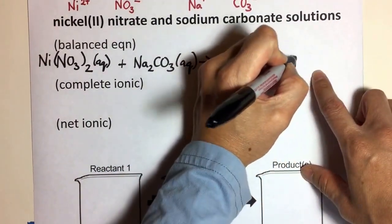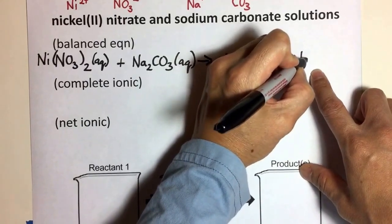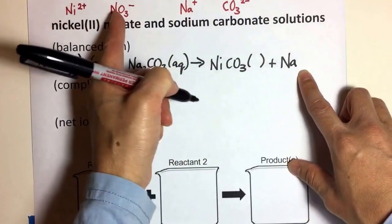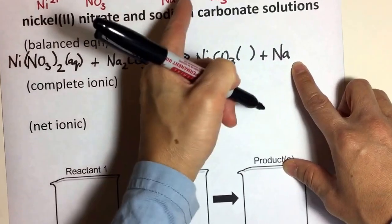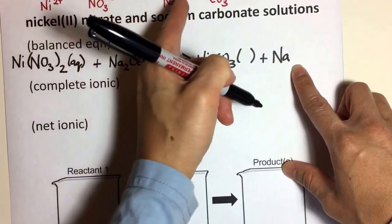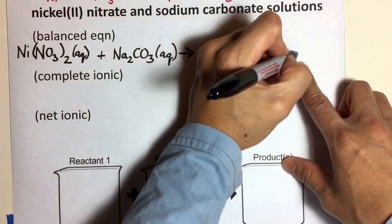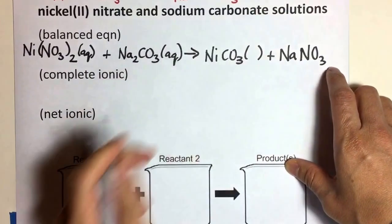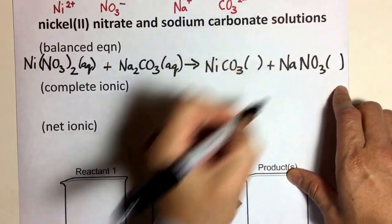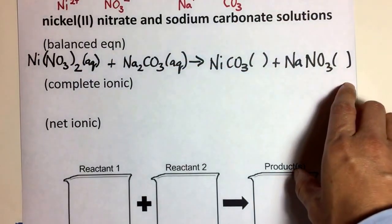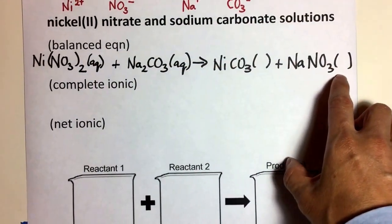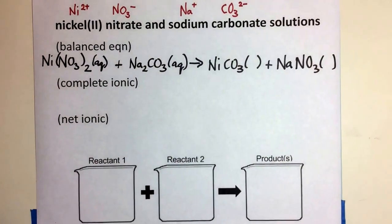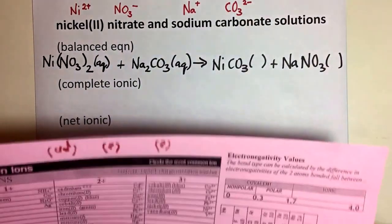It looks like this balances out nicely. So nickel two carbonate looks like this, and I don't know the states of matter just yet — I'm going to figure that out using the solubility table. Then I'll write out the next formula, which is sodium nitrate. Notice the charges neutralize themselves nicely — they're electrically neutral with one of each. I'll check the solubility table for the solubility of those two newly formed ionic compounds.